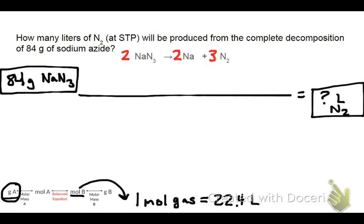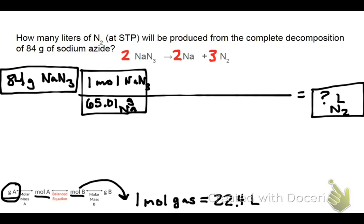So let's go ahead and start with our grams, which we have here in the top left. Let's convert that to moles using the molar mass of sodium azide. So I'm going to put one mole of NaN3 there in the top left. Looking at my periodic table, adding up the molar mass of sodium and three nitrogens, that comes out to about 65.01 grams of NaN3.